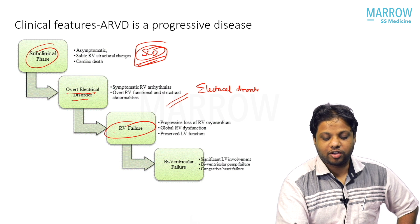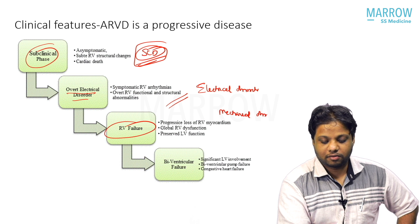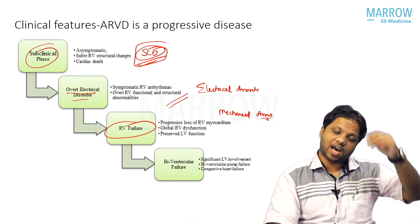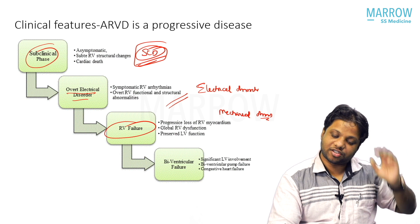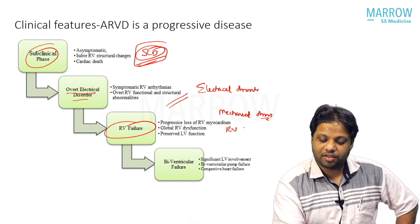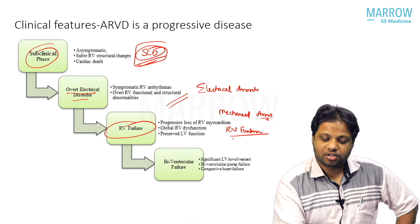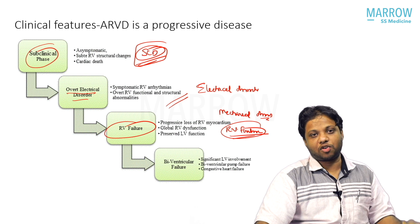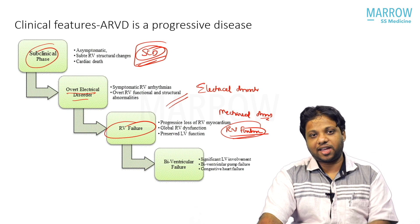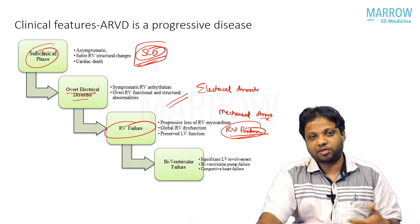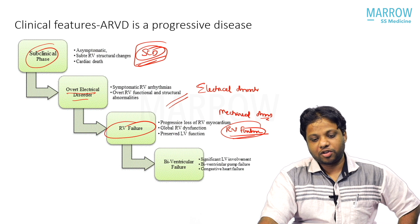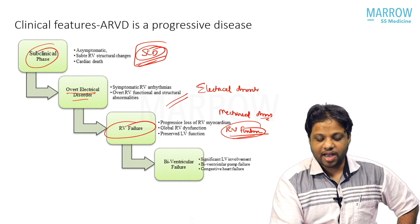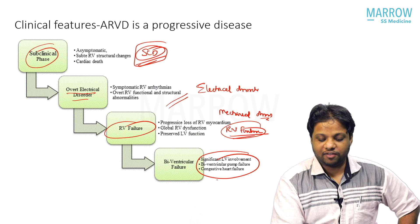Phase three is a mechanical disorder where RV failure dominates with preserved LV function. At this stage the patient can have RV aneurysms, RV dilation, regional wall motion abnormalities, and decreased RV ejection fraction, presenting with elevated JVP and peripheral edema. Phase four is biventricular failure where LV plus RV involvement presents as CCF.